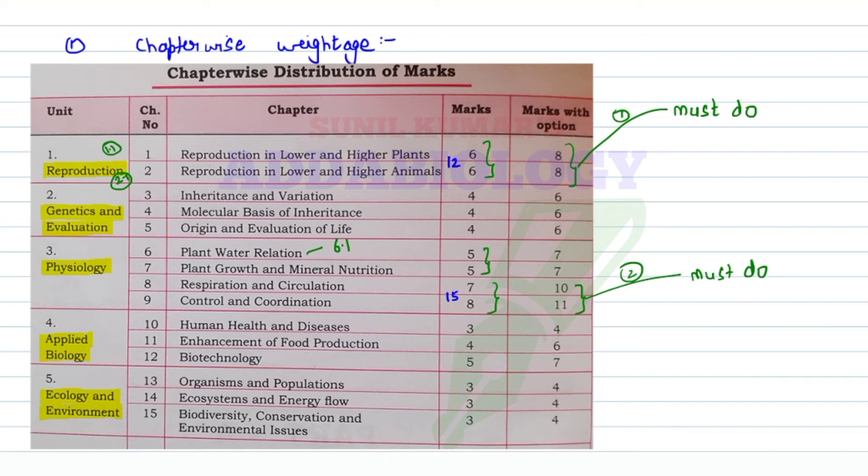The next chapter you'll do is plant water relation, then plant growth and development. In plant water relation, you have only 6.1, 6.2, and 6.3 for your exam, and in plant growth and hormones, you have only the hormone section. This becomes my third important unit.